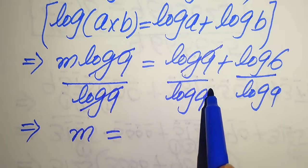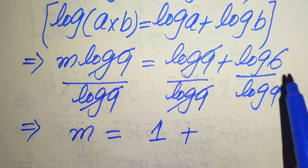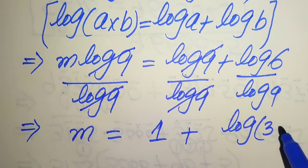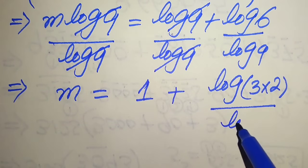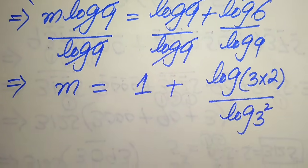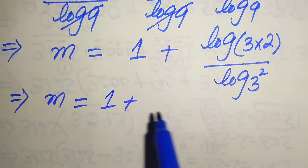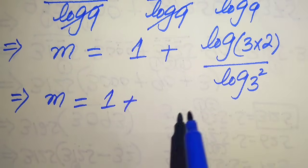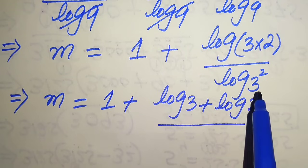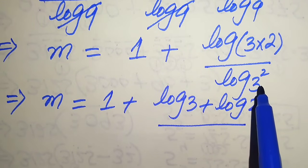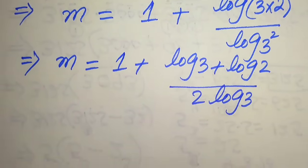We rewrite log 6 as log of 3 times 2, divided by log 9, and we write 9 as 3 squared. Applying the power rule, the 2 moves to the front of log 3, giving log 3 plus log 2 in the numerator and 2 times log 3 in the denominator.